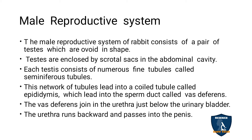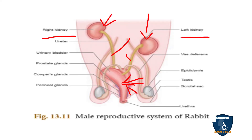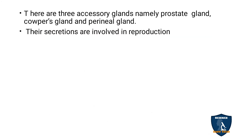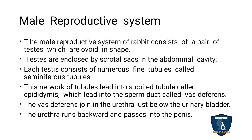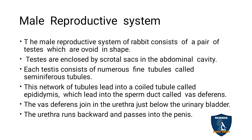The male reproductive system consists of a pair of testes, which are ovoid in shape. The testes are surrounded by scrotal sacs, which are located in the abdominal region.